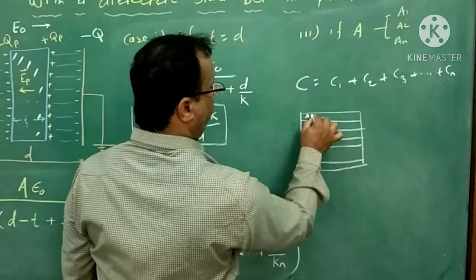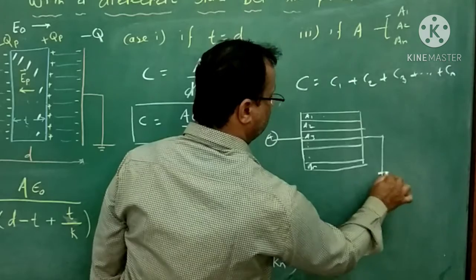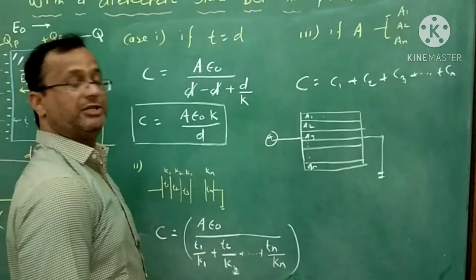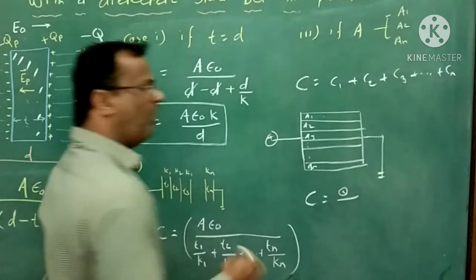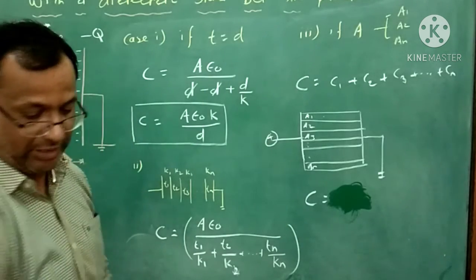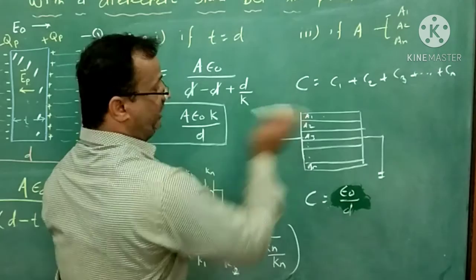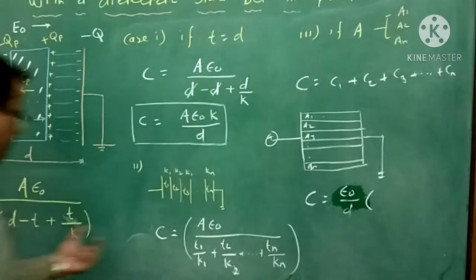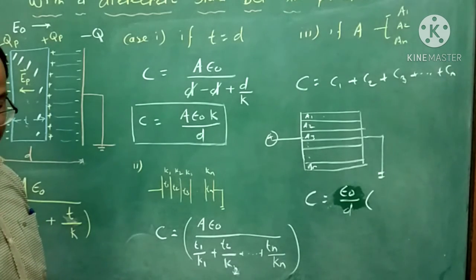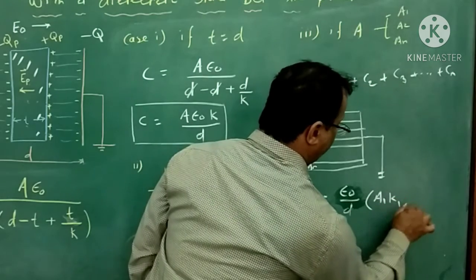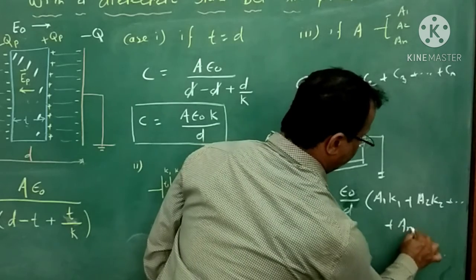We want to substitute the values of C1, C2, etc. For the first capacitor, using the formula ε₀/D, the distance is kept the same since we divide the area. So inside the bracket, for the first capacitor we get A1·K1, for the second A2·K2, and so on up to the nth dielectric slab giving An·Kn.